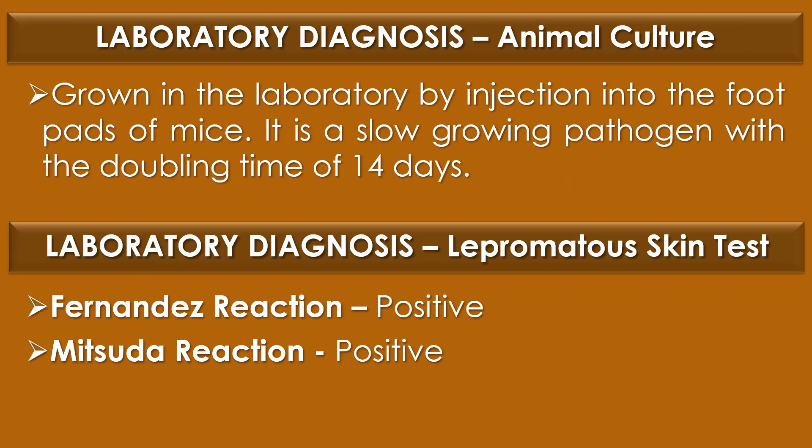Animal culture: Mycobacterium leprae has not yet been successfully cultured in vitro, but it can be grown in the laboratory by injection into the foot pads of mice. It is a slow-growing pathogen with a doubling time of 14 days. Two lepromin skin tests, the Fernandez reaction and the Mitsuda reaction, are used for the identification or diagnosis of Mycobacterium leprae.